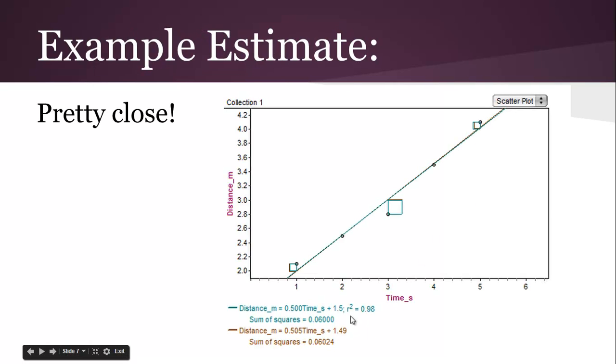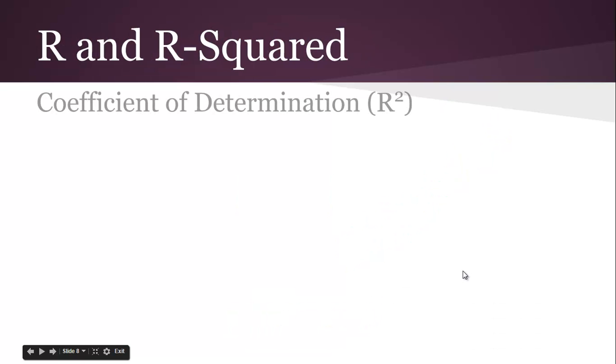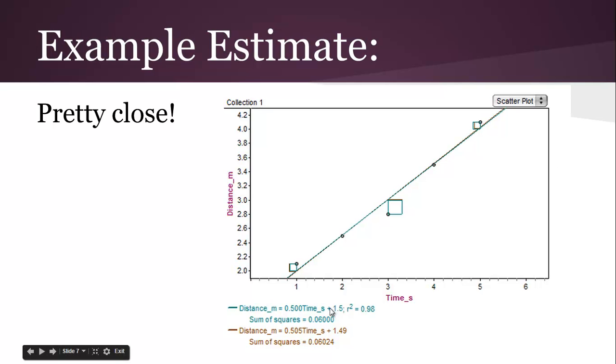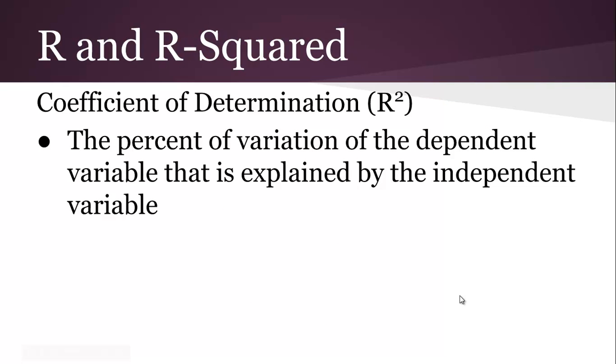The other thing that we haven't talked about is we talked about the slope and the y-intercept, but this number r-squared beside it. The r-squared is called the coefficient of determination. That's something you're going to have to remember. Its coefficient of determination is what we call r-squared. What it is is the percentage of variation of the dependent variable that is explained by the independent variable. That's how you explain what r-squared is. In this case it was 98%, so that means 98% of the variation in distance is explained by time.